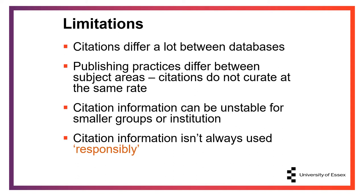Citation information can also be unstable for smaller groups or institutions, and this is especially true of FWCI. Times Higher Education, for example, highlighted a UK institution as really stepping up in the league tables, and it turned out it was a smaller institution that had a collaborative part-time researcher working on a collaborative study. This study had a huge number of contributors and was publishing papers regularly, having a big impact on the small institution's average citation count. League tables don't represent this. Citation information is not always used responsibly, and this can be seen at all levels — individual research funders, institutions, and more.